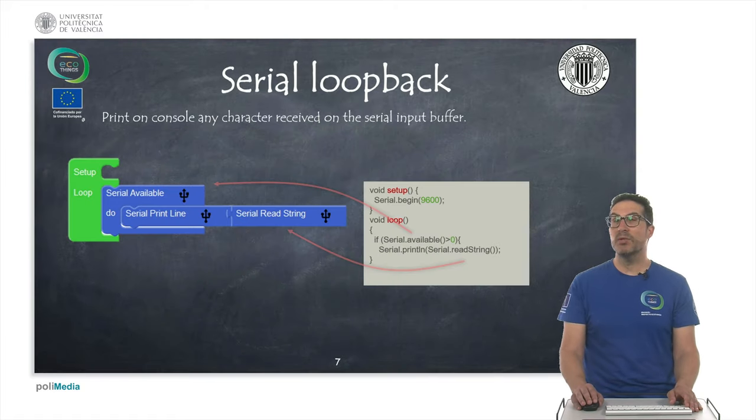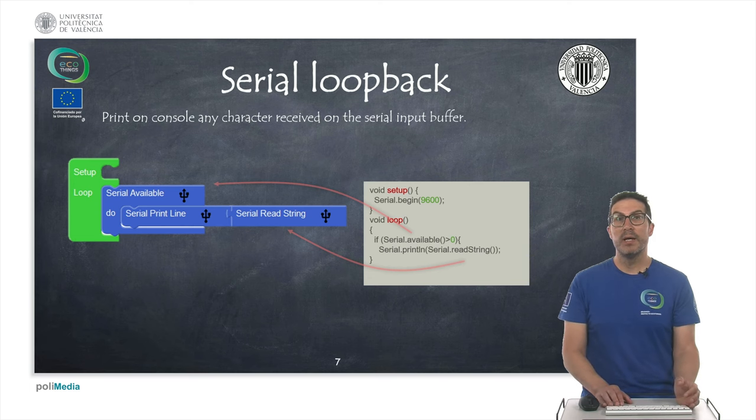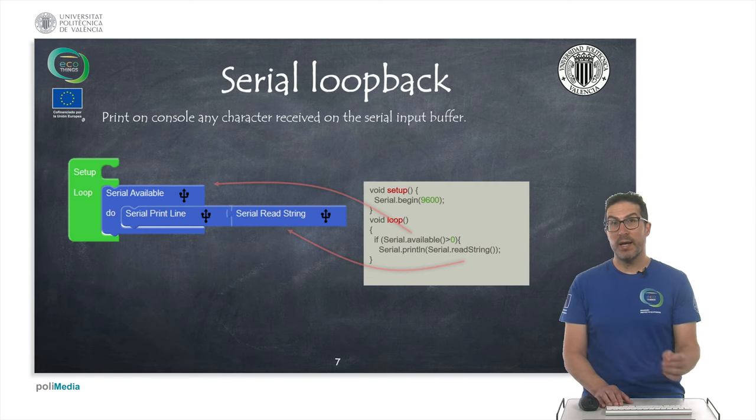In this second example, the idea is to implement a serial loopback. Any character that we receive from the point of view of the electronics will be returned back as a print line, a new line, to be displayed on the serial console.